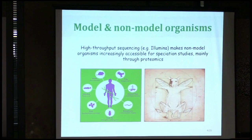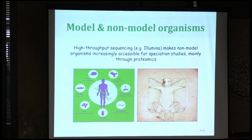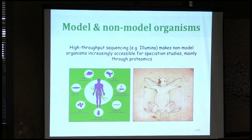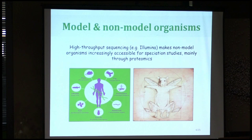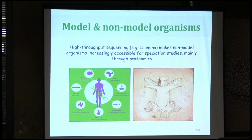Before, when using genetic resources, speciation was mainly studied in model organisms such as human and mouse. However, with high-throughput sequencing techniques such as Illumina, now it's possible to study speciation in non-model organisms as well. That's mainly what we call speciation genomics.